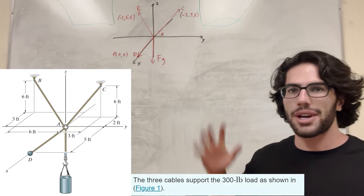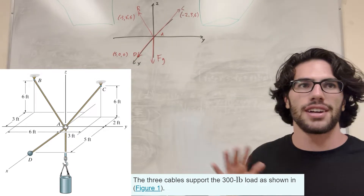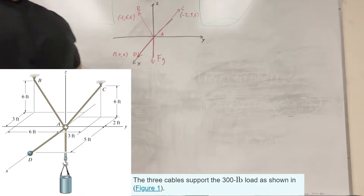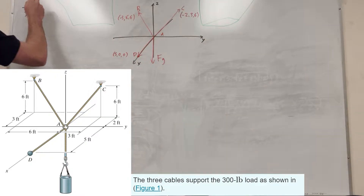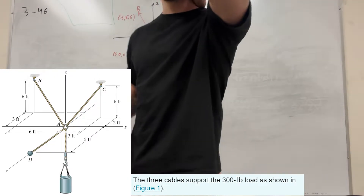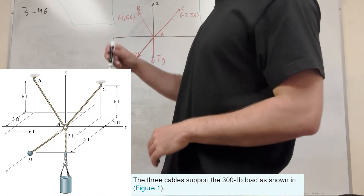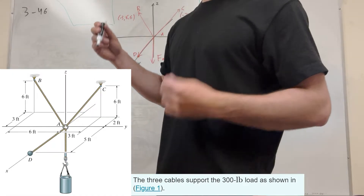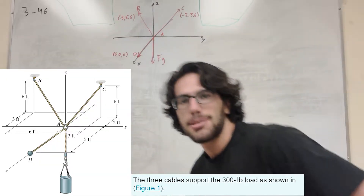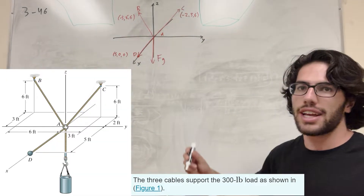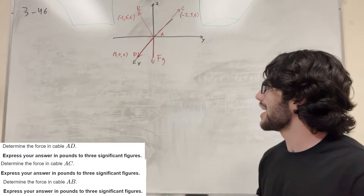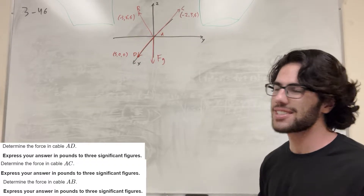What's up, Cal gang? All right, so we got this problem here, 3.46. So in this problem, we have these three forces in a bucket. It's 300 pounds in the bucket that's pulling down on it, and it wants us to find the forces in all the cables. So let's go ahead and find the forces in all the cables.